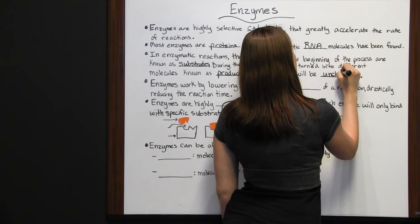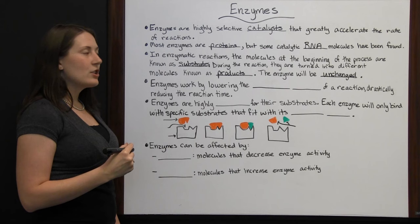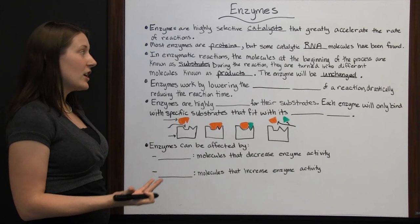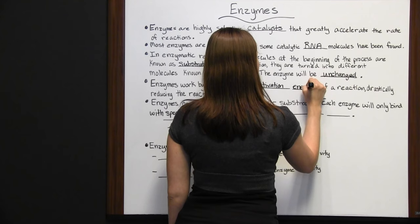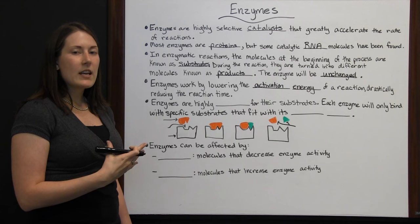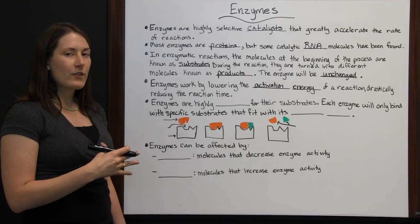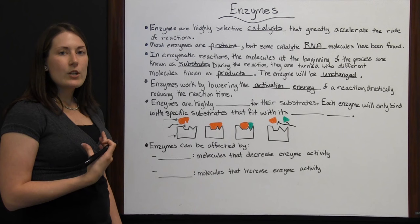At the end of the reaction, the enzyme will be unchanged. It may change shape a little to bind to the substrate, but the enzyme itself will not turn into different products or get bigger or smaller. Enzymes work by lowering the activation energy of a reaction, drastically reducing the reaction time.